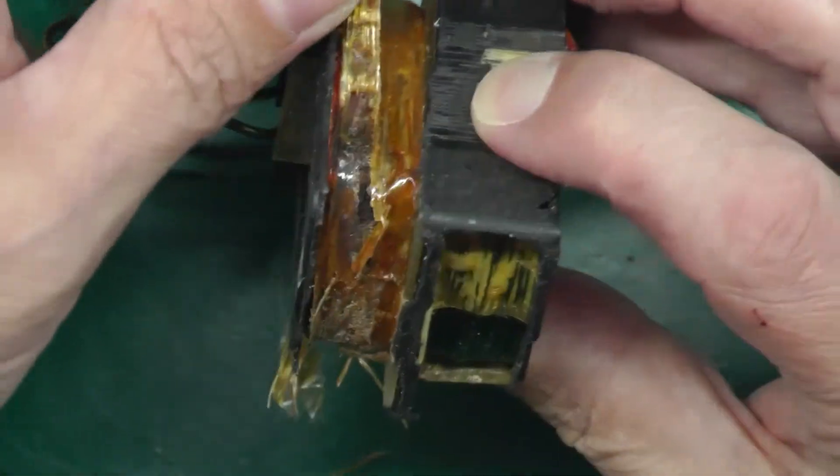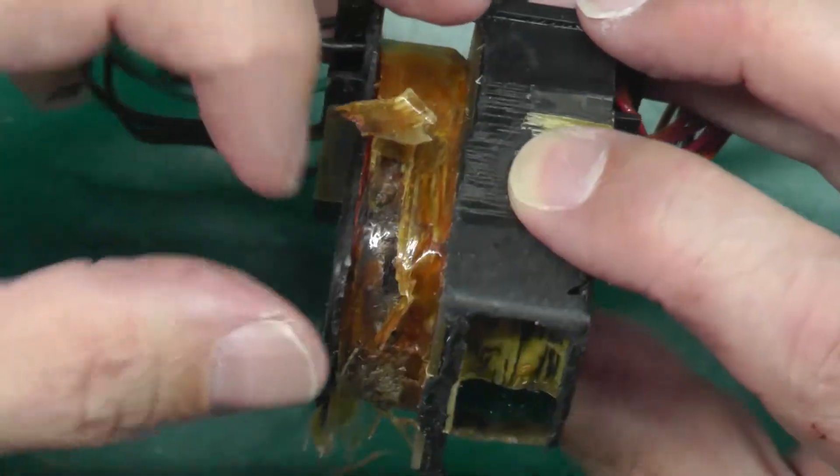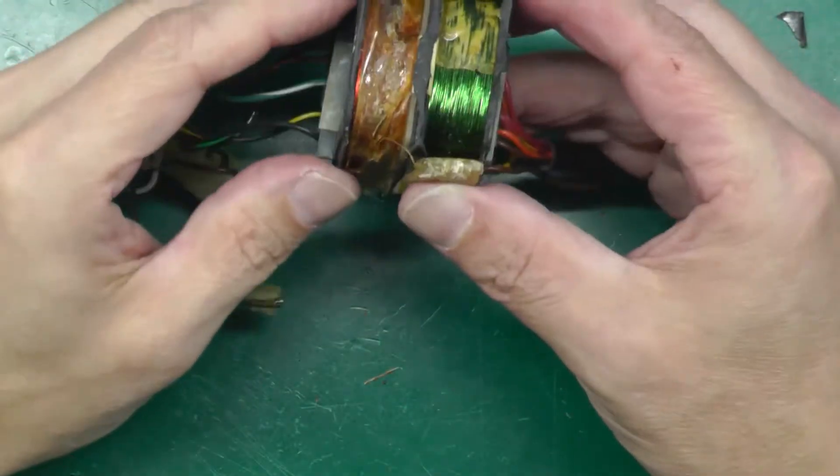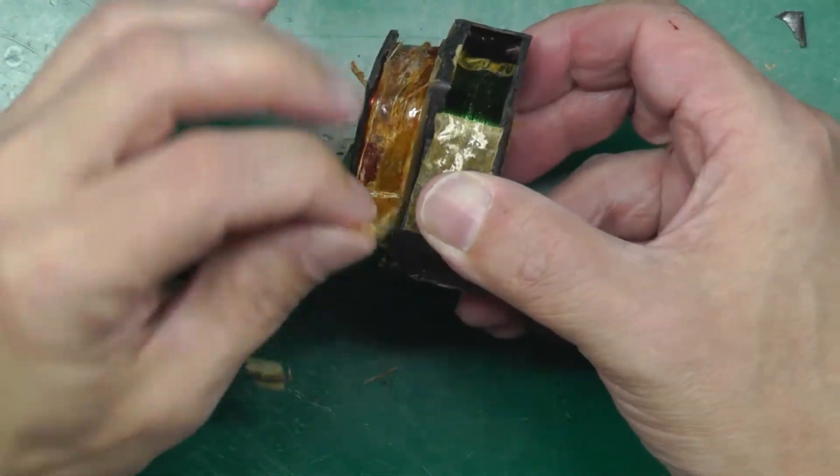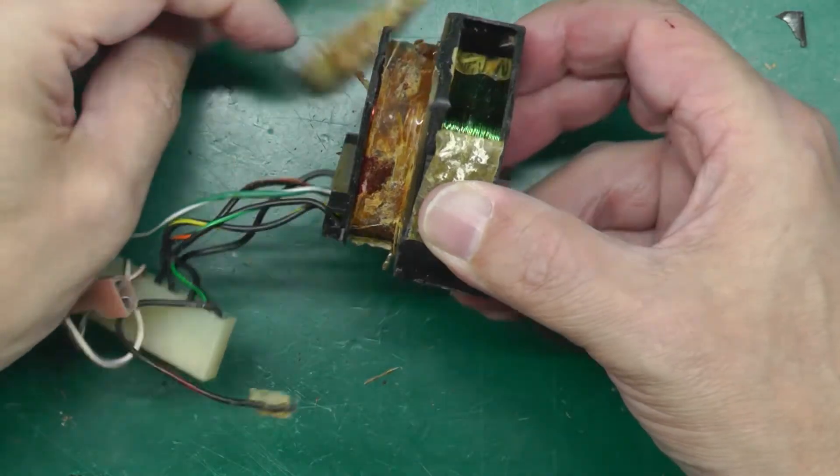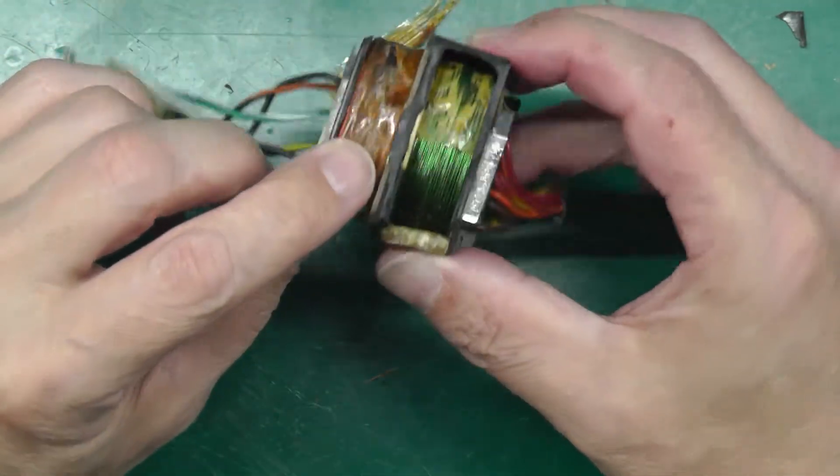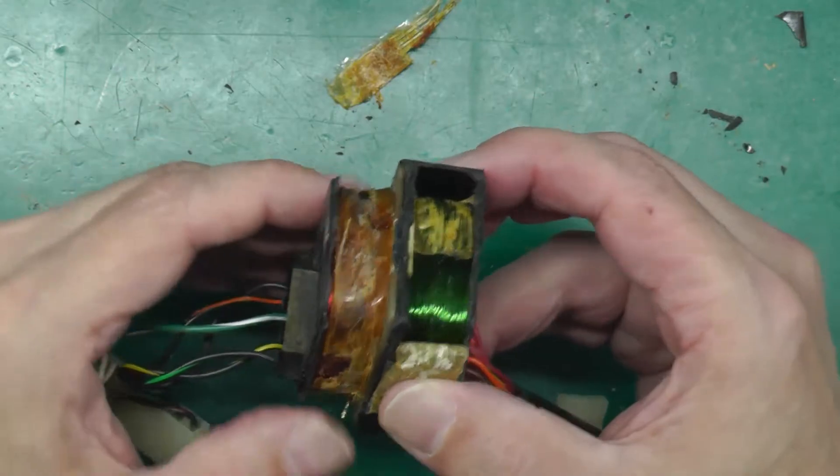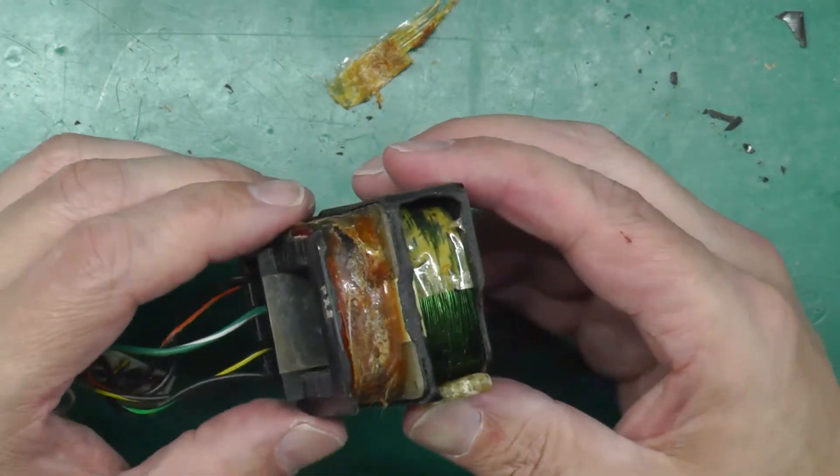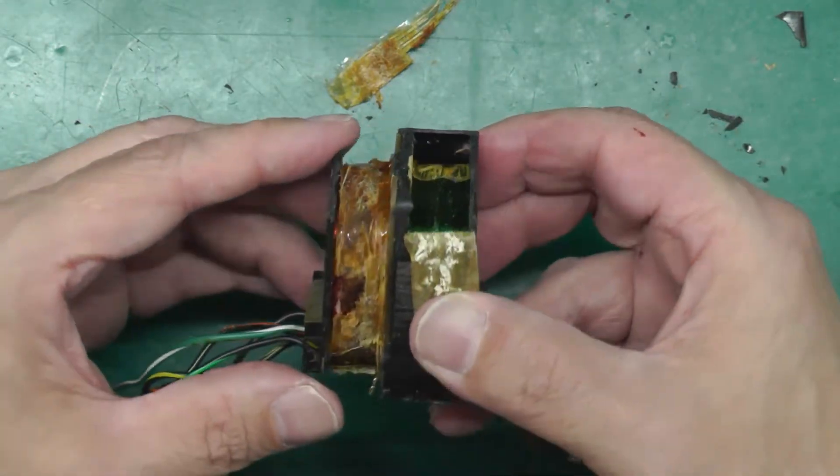You can see that it's just completely burnt out there. So the next step is to peel off all this tape on the primary side and start cutting out and unwinding the primary side to expose the bobbin, the bare bobbin, and then I can start thinking about winding it.